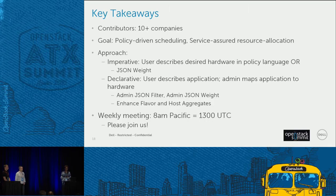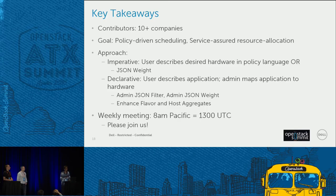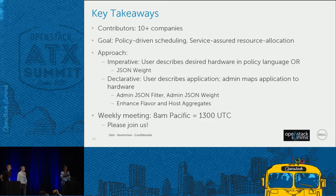Q: Is there any thought to providing anti-affinity with the scheduler via a method like this? A: Right now there are affinity and anti-affinity rules, but they're very simplistic — just whether a VM belongs to a particular server group or not. With this extensible framework, our goal is to support much more complex rules — for example, you could craft a rule based on network distance.